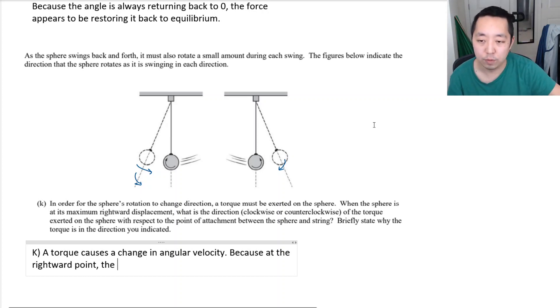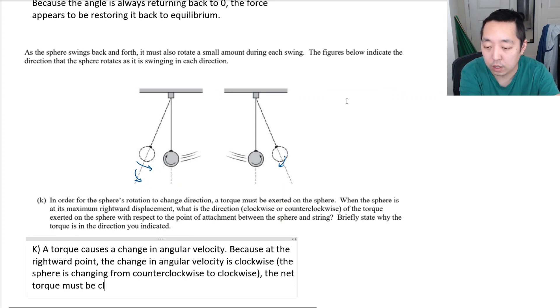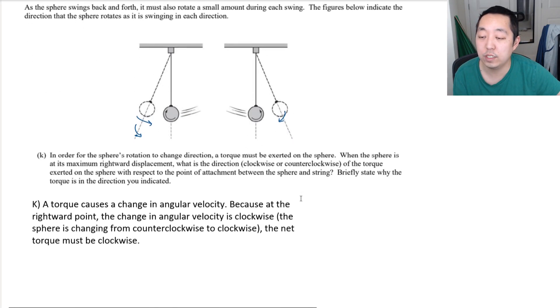Because the sphere's rotating one way and then afterwards it's rotating the other way. The net torque or the change in velocity must be clockwise. Because it was going counterclockwise and then it's ending up clockwise. That means the net change is clockwise. Hopefully that makes sense to you. And the way you think of it is like, before it was going counterclockwise, after it's going clockwise, so the change is clockwise. Because of the rightward point, the change in angular velocity is clockwise. The sphere is changing from counterclockwise to clockwise. The net torque must be clockwise. And that finishes the question there.